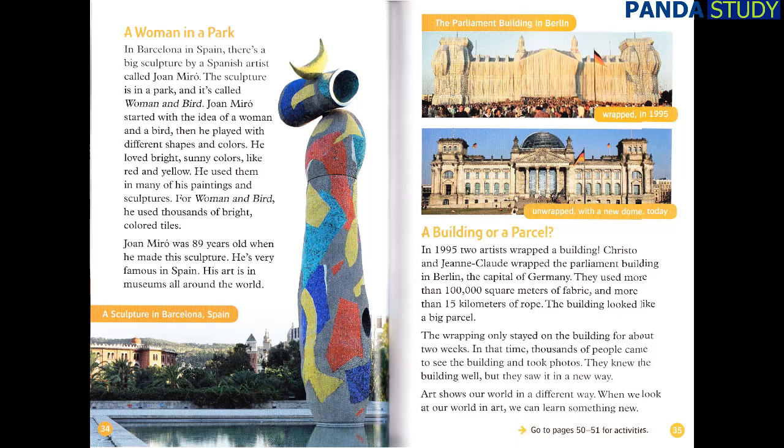In 1995, two artists wrapped a building. Christo and Jean-Claude wrapped the Parliament building in Berlin, the capital of Germany. They used more than a hundred thousand square metres of fabric and more than fifteen kilometres of rope. The building looked like a big parcel. The wrapping only stayed on the building for about two weeks. In that time, thousands of people came to see the building and took photos. They knew the building well, but they saw it in a new way. Art shows our world in a different way — when we look at our world in art, we can learn something new.